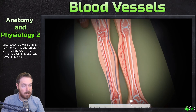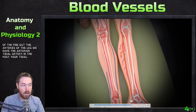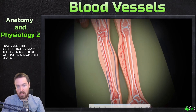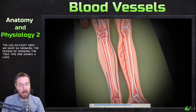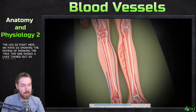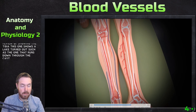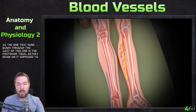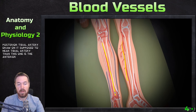Now the arteries of the leg: we have the anterior tibial artery and the posterior tibial artery going down the leg. This view shows the leg turned out — the one running down through the calf is the posterior tibial artery, and this one is the anterior tibial artery.